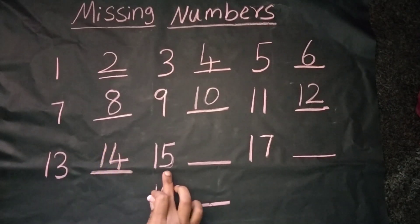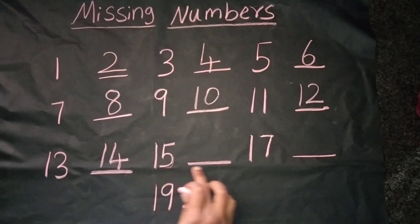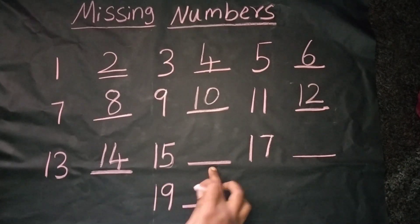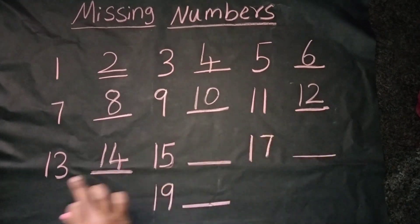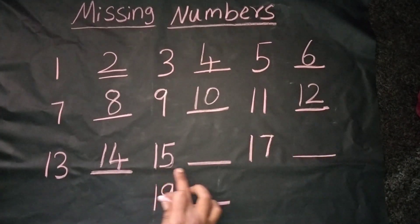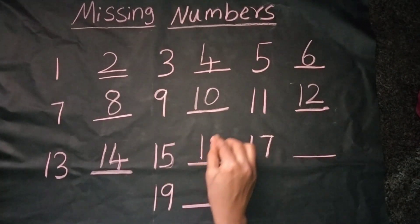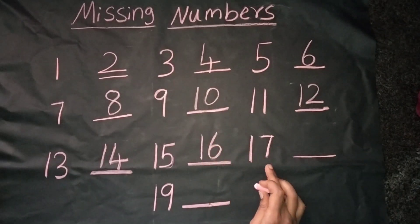We can see the number 15. The next number is — we should count from 11: 11, 12, 13, 14, 15, 16. Yes, it's correct. The number is 16.